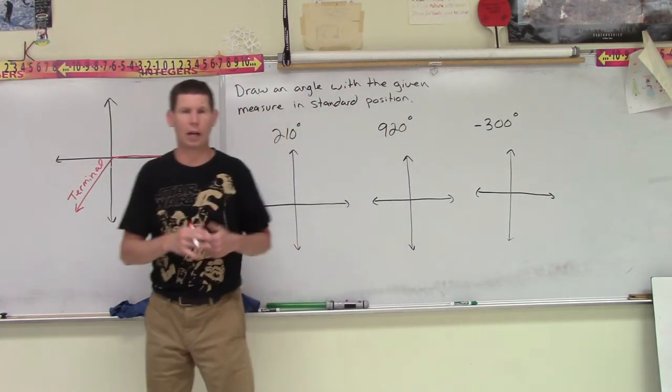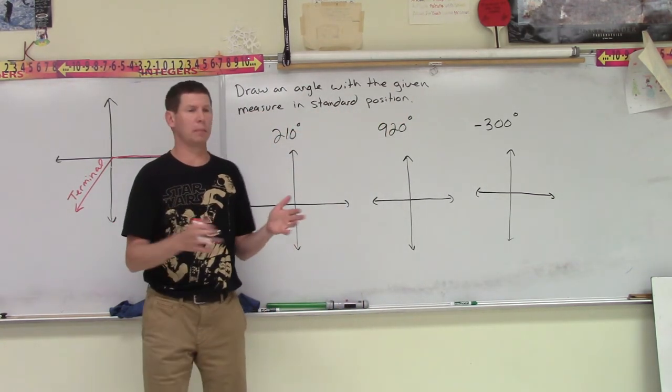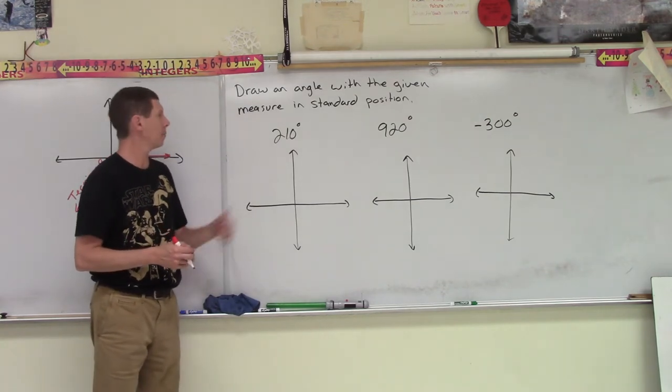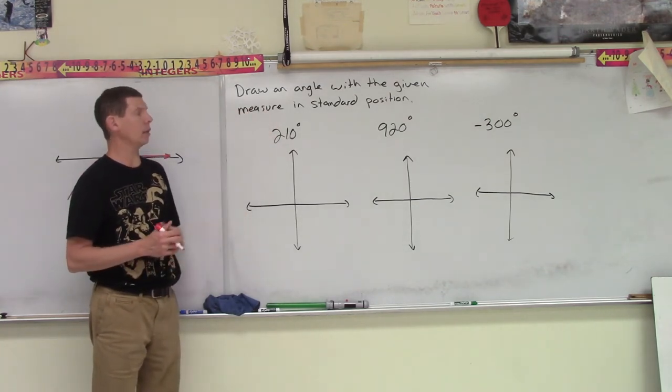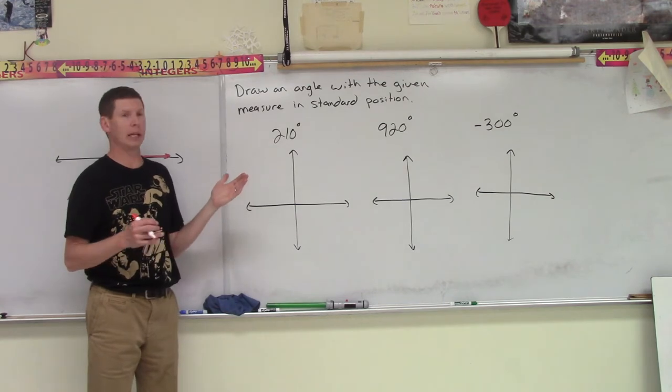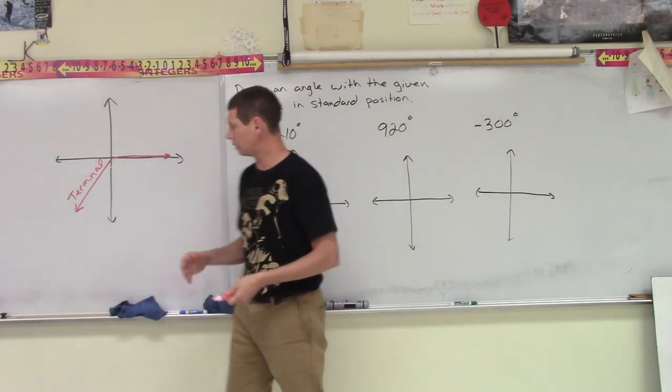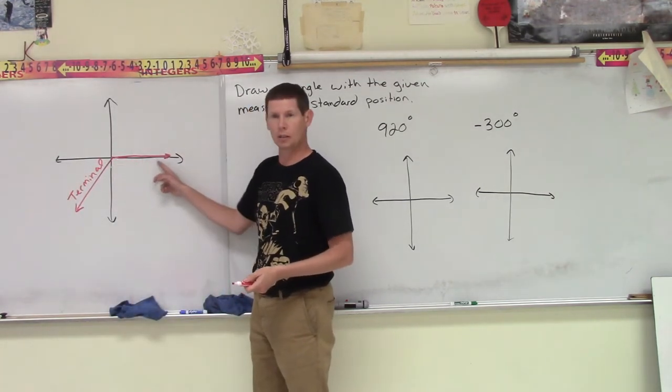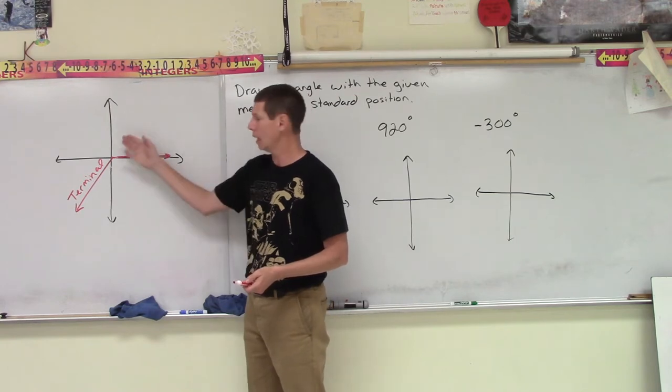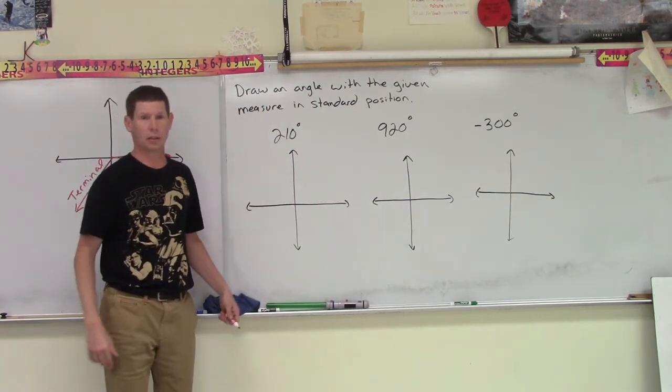So we're going to start off this first lesson by just drawing different angles of rotation. We want to draw an angle of rotation with a given measure in standard position. By the way, this is standard position when we have our initial side on the positive x-axis and our terminal side elsewhere in the universe.